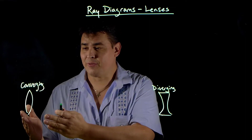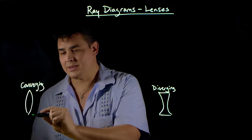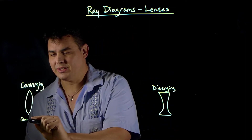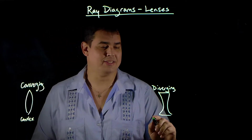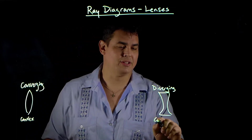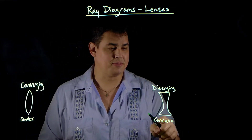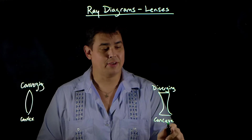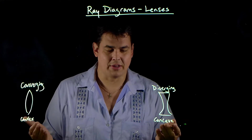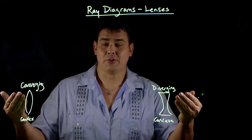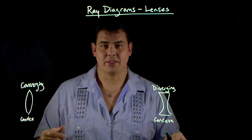Here's a converging lens and here's a diverging lens. Sometimes you'll see a converging lens called a convex lens and a diverging lens called a concave lens. The only way I remember this is because concave — cave — it caves in. But these names aren't helpful; it's better to remember converging and diverging in those shapes.